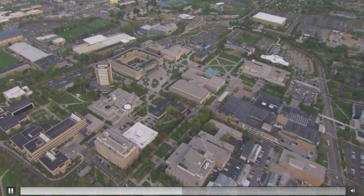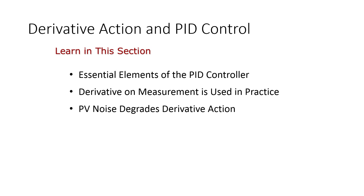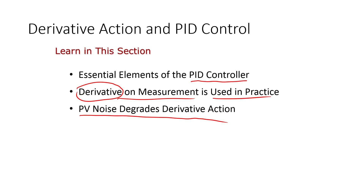Welcome back to Process Dynamics and Control. Today we're going to be talking about proportional integral derivative controllers and the PID equation. We're covering it with a particular focus on the derivative portion — how it's used in practice, derivative on measurement versus derivative on error, and how that's tuned. We'll also talk about how PV noise degrades derivative action, causing many practitioners to eliminate the derivative term.